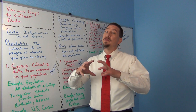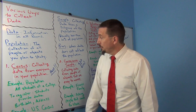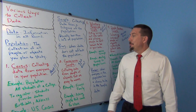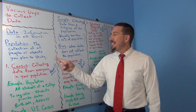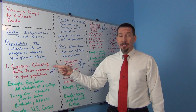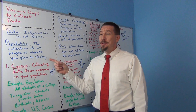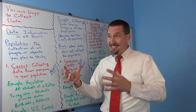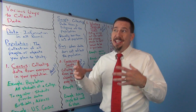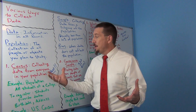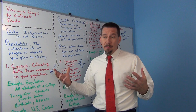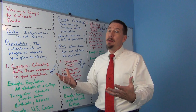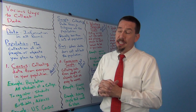So a census means getting data from everybody in the population, or at least trying to. But that is usually not what you can do in real life, especially if you're a statistician or data scientist trying to figure something out. If your population is large — like everyone in California — there's no way you're going to get data from every single person.